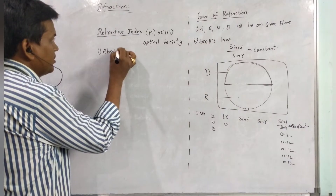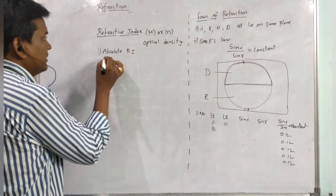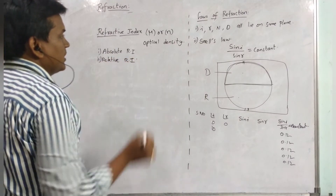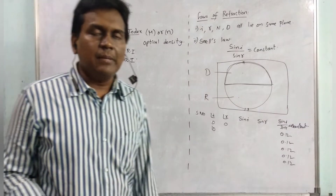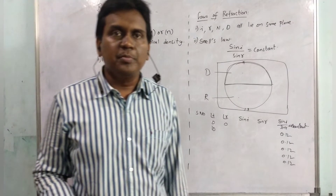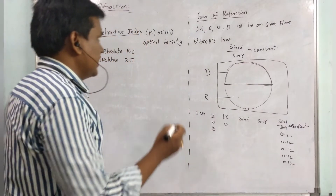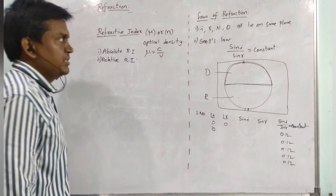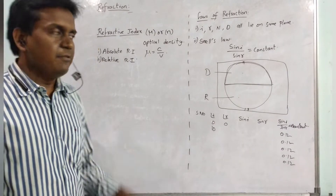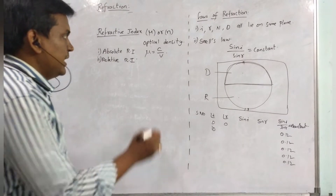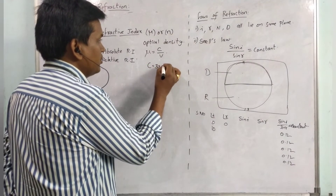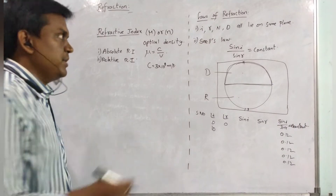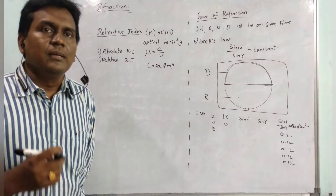The absolute refractive index is defined as the ratio of the speed of light in vacuum to the speed of light in a given medium. That is: mu = C / V, where C is the speed of light in vacuum (3 × 10⁸ m/s, a constant) and V is the speed of light in the given medium, which varies depending upon the medium.